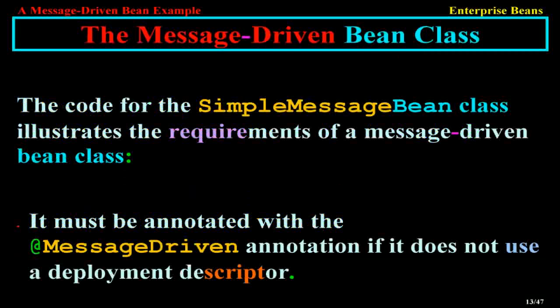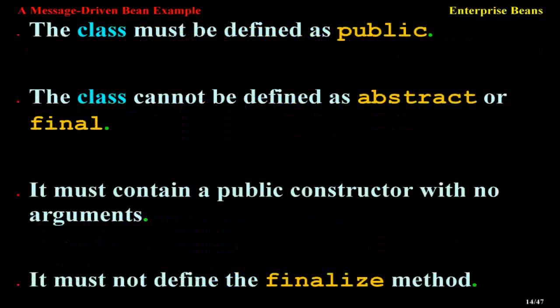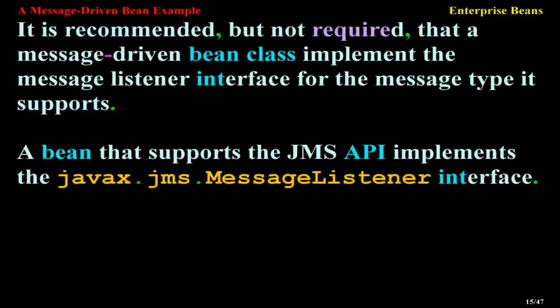The code for the simple message bean class illustrates the requirements of a message-driven bean class. It must be annotated with a @MessageDriven annotation. If it does not use a deployment descriptor, the class must be defined as public. The class cannot be defined as abstract or final. It must contain a public constructor with no arguments. It must not define the finalize method. It is recommended, but not required, that a message-driven bean class implement the message listener interface for the message type it supports.